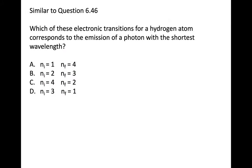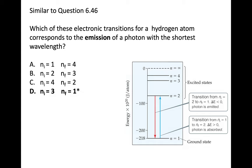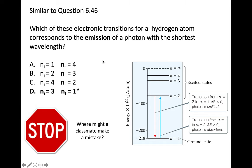Take a second. Consider this question. I think D is the best choice. I'm reading this carefully to first note that it's describing the emission and it's asking for the shortest wavelength. Take a second. Where might a classmate make a mistake with this question? What do you think a common error would be?